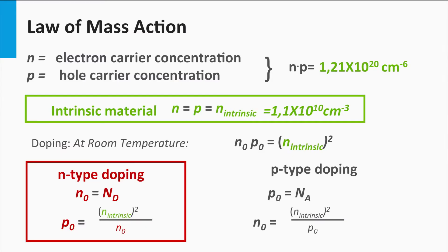The same is valid for p-doped silicon materials. We incorporate boron atoms with a density N_A in the silicon network. We assume that all acceptors take one electron and therefore create a hole density p0 equal to the acceptor density N_A. This means that the electron density n0 is equal to the square of the intrinsic charge carrier density divided by the hole density p0.